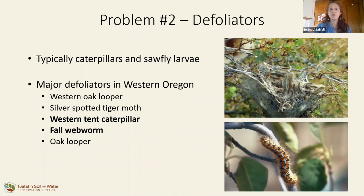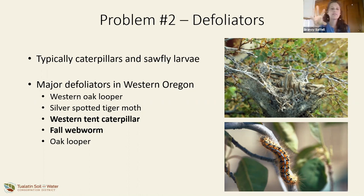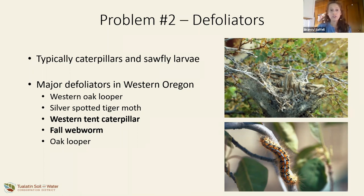The second major problem is defoliators. When I started at Extension in 2014, we had an outbreak of western tent caterpillar. Questions also come in about European and Asian gypsy moth as invasive insects of concern. Defoliators are typically caterpillars or sawfly larvae. The major ones in western Oregon to know are western tent caterpillar and fall webworm, which are especially useful for master gardeners to have in their back pocket.